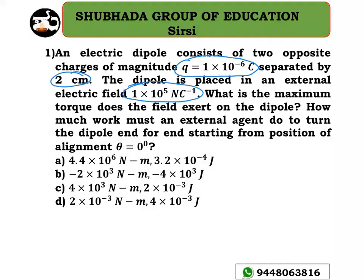How much work must an external agent do to turn the dipole end for end, starting from the position of alignment theta equal to 0 degree?